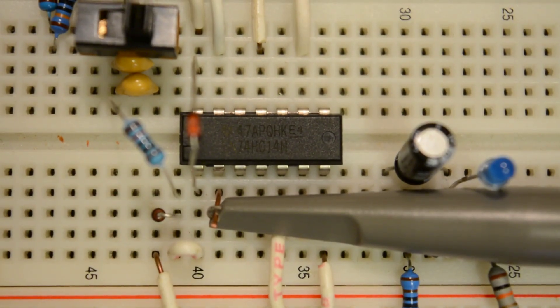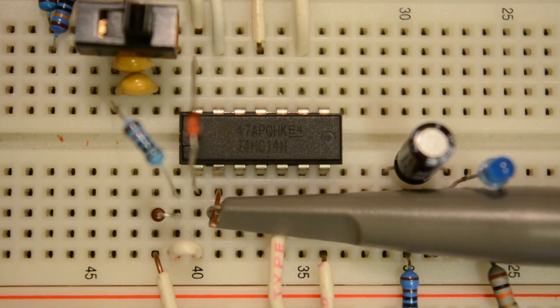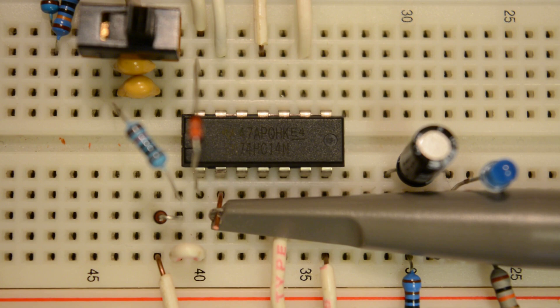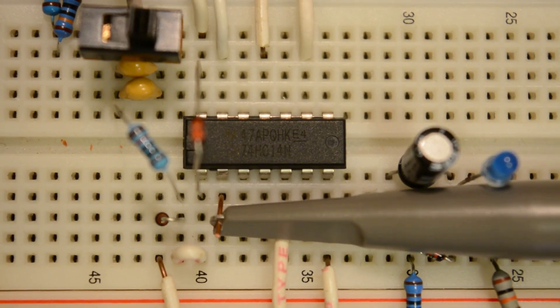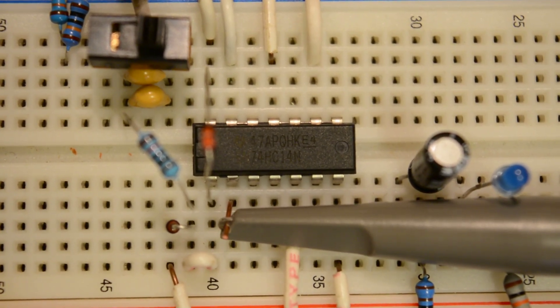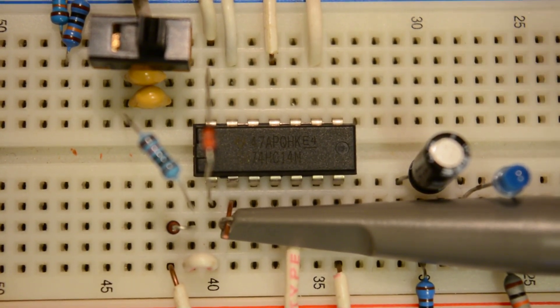This is the Schmidt trigger inverter chip. I'm only using one gate at the moment. It's the lower left gate. Its input is pin one and its output is pin two. My oscilloscope is plugged into pin two. Both pin one and two are plugged into the breadboard. Let's see what we get on the oscilloscope.